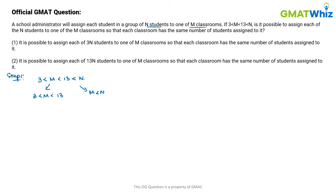We need to find if it is possible to assign each of the n students to one of the m classrooms so that each classroom has the same number of students assigned to it. This is a definite yes or no question. We need to check if n over m is an integer or not.